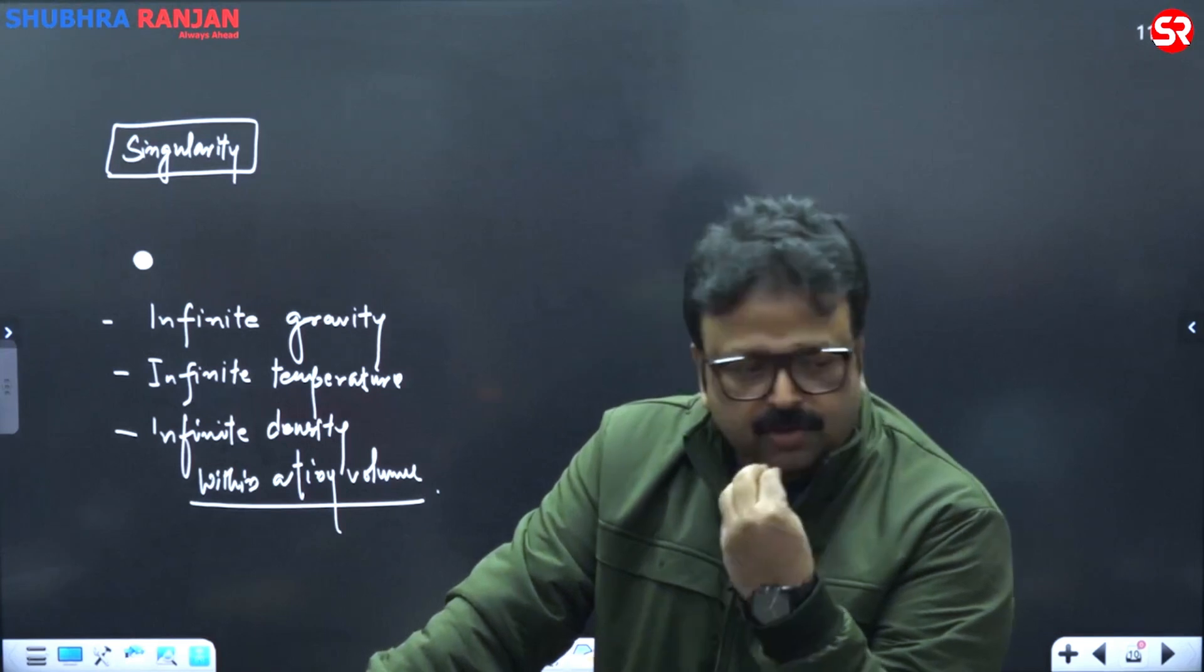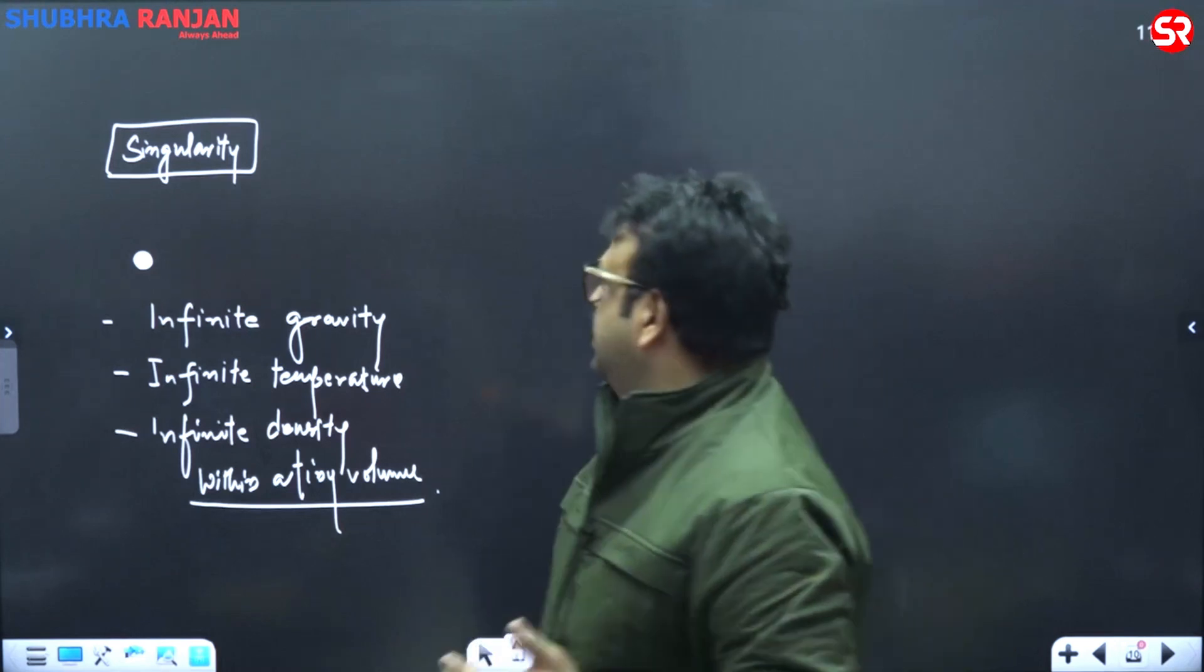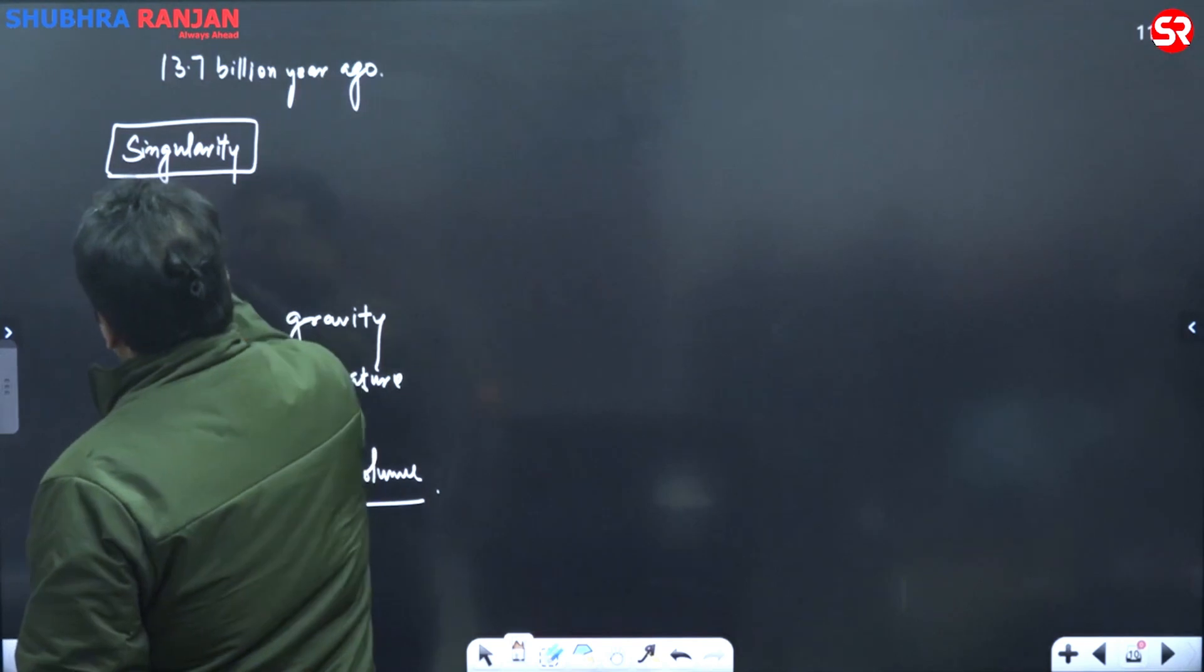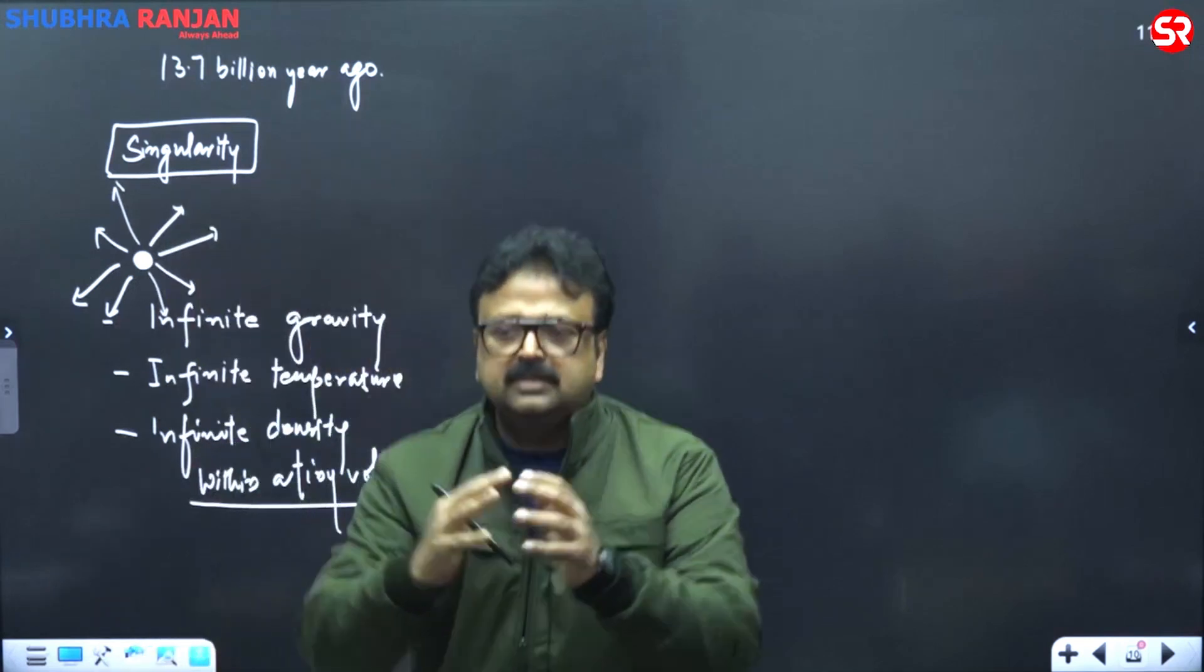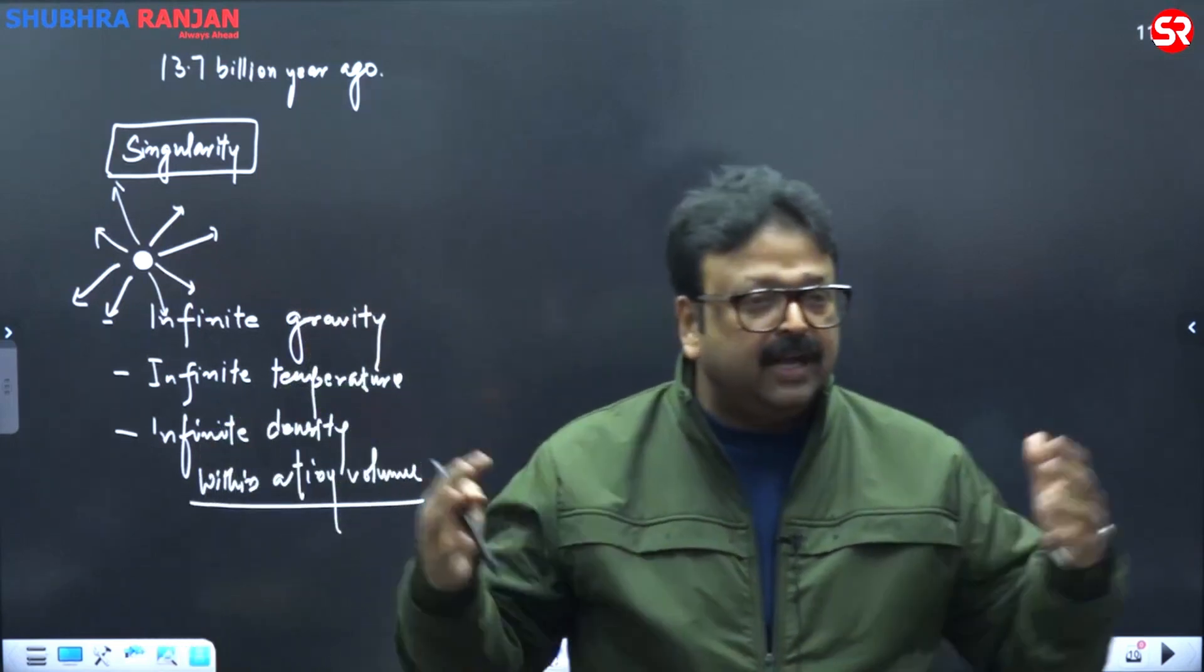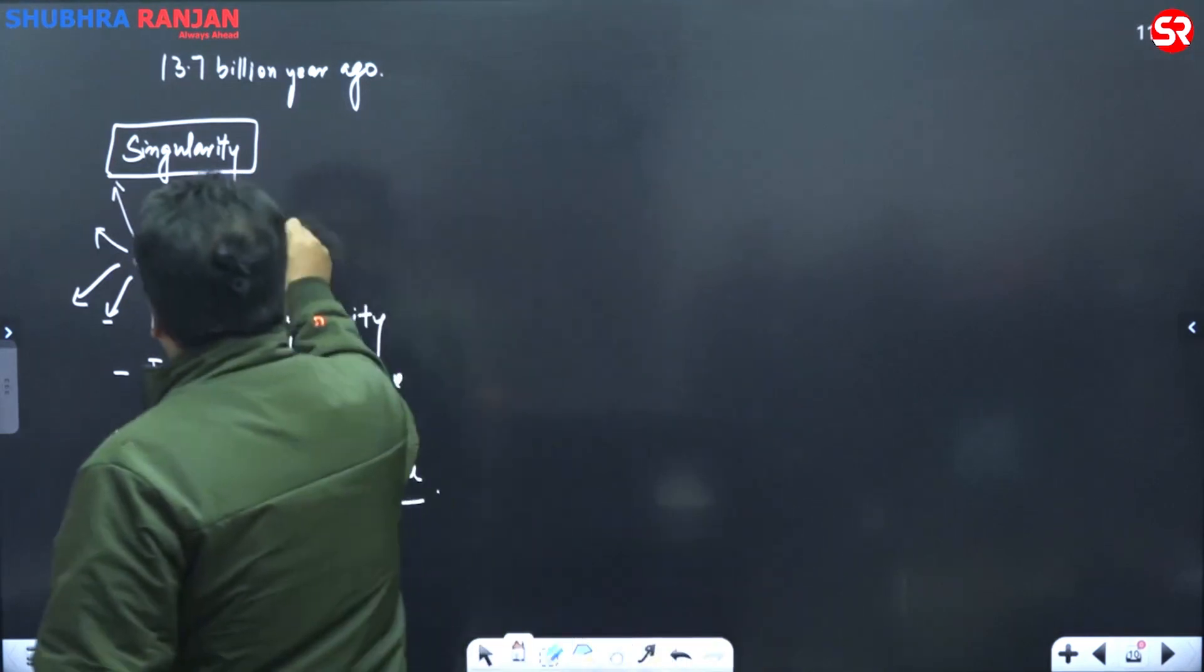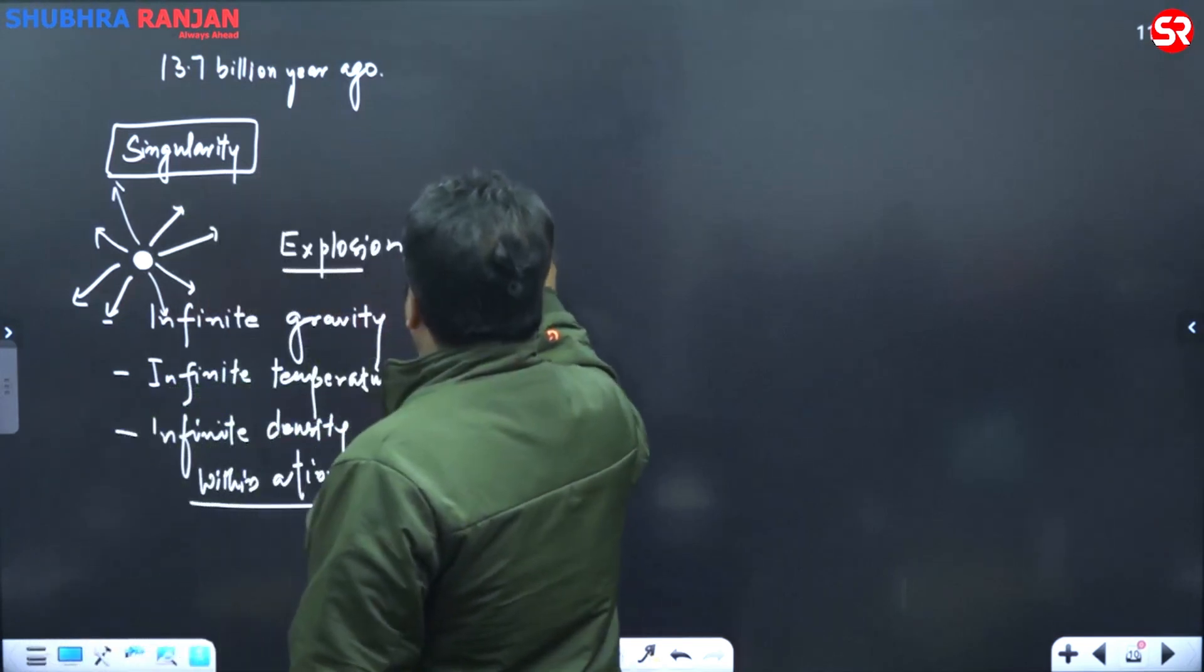It was confined in a tiny volume and one day there was an explosion and this explosion have taken place almost 13.7 billion years ago. There was an explosion and as you all have seen that after explosion, what happened? Everything start expanding and expansion started. Initially, the speed of the expansion was very high, but slowly it get slower down. Within fraction of second, after explosion, this explosion is basically called as Big Bang. This explosion is termed as Big Bang.